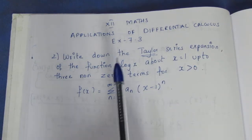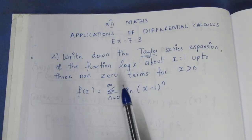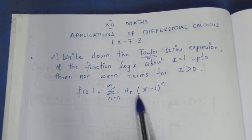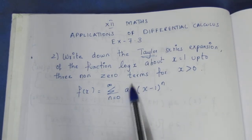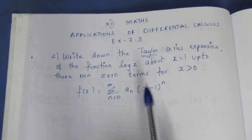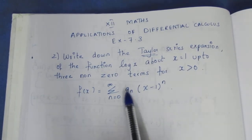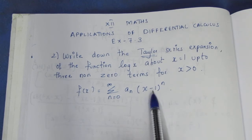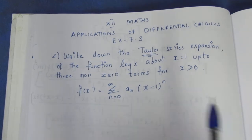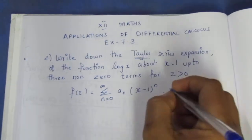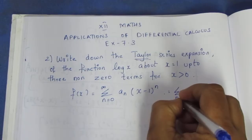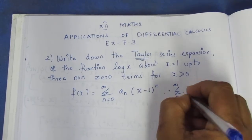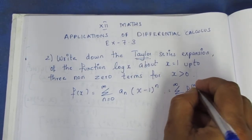We need to find the derivatives. This is the differentiation — f to the nth derivative. Looking at the actual values, n is equal to 0 to infinity. This is f of n.